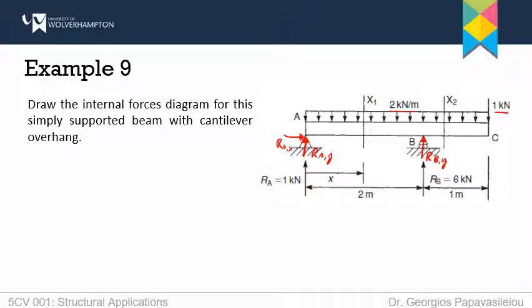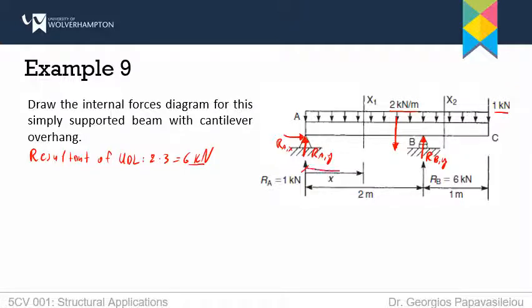For the UDL, I have to calculate the resultant. The resultant of the UDL is the area of this shape — it is a rectangular one. The height of the rectangle is 2 kN per meter, and the base is the whole span over which it applies, which is 3 meters. So, this is 2 times 3, which is 6 kN. This resultant applies at a distance of 1.5 meters from each edge of the beam, since its whole length is 3 meters.